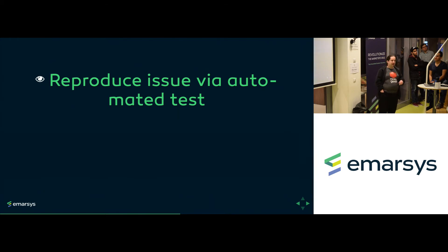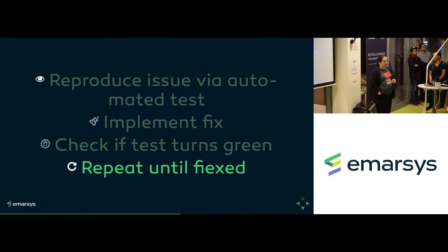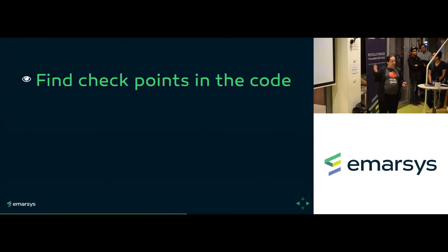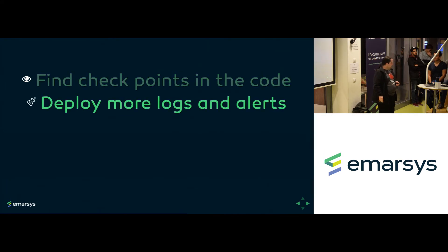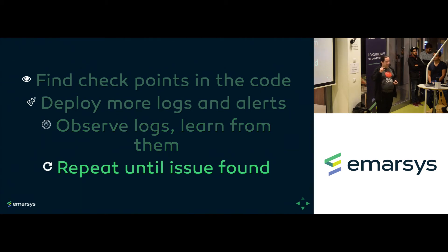If we know about an issue — say we got an alert — we reproduce the issue with an automated test, implement the fix, check if the test turns green, and repeat until fixed, because the issue might still be there and we may need another test. If we don't know where the problem is, we add more logs: find checkpoints in the code, deploy those logs and alerts, observe the logs, learn from them, and repeat until we find the actual issue.